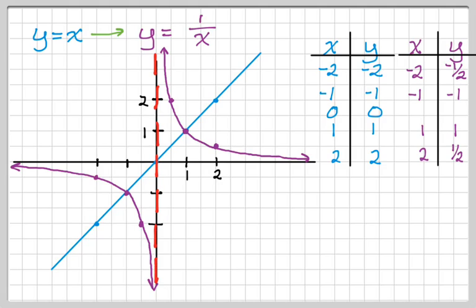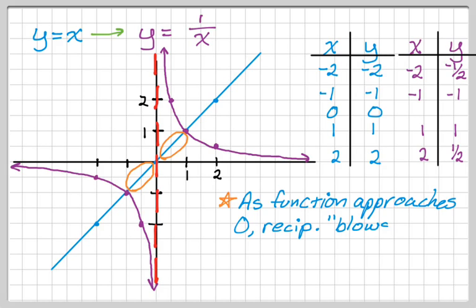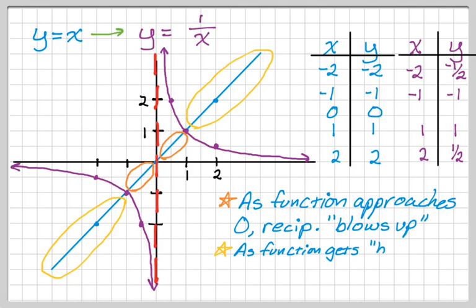If you take a look, we have a vertical asymptote at x equals 0 — that's a line that it's kind of hugging. In the region where the x values are getting very, very small, the reciprocals are getting very, very big. As a function approaches 0, the reciprocal blows up — it has a vertical asymptote and goes to positive or negative infinity as it approaches that asymptote. In regions where the function itself is getting really, really big, the reciprocals are going to get really, really small, approaching 0. That's the behavior of reciprocal functions, and you can use it to graph slightly more complicated things.